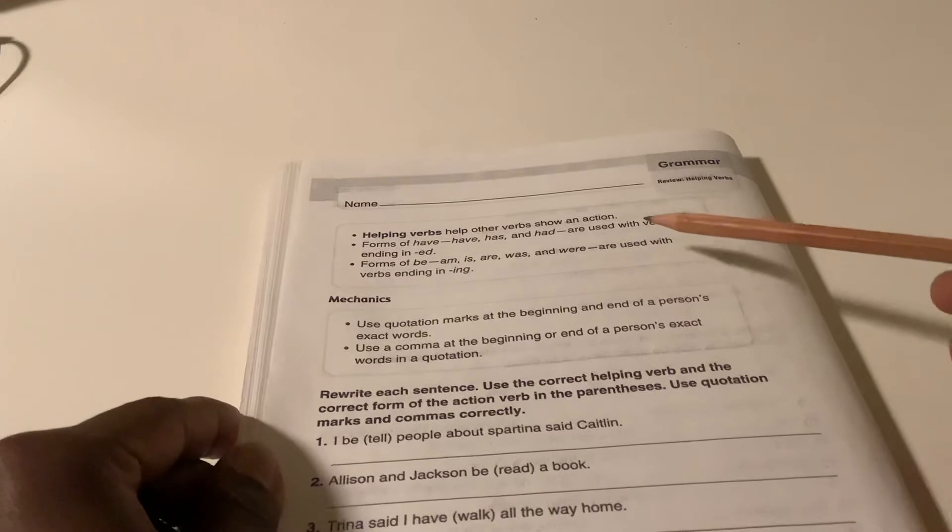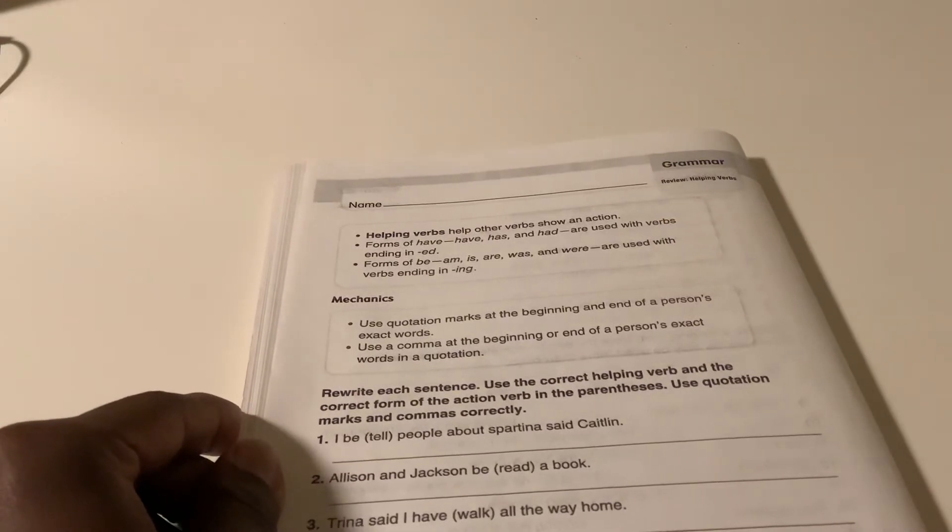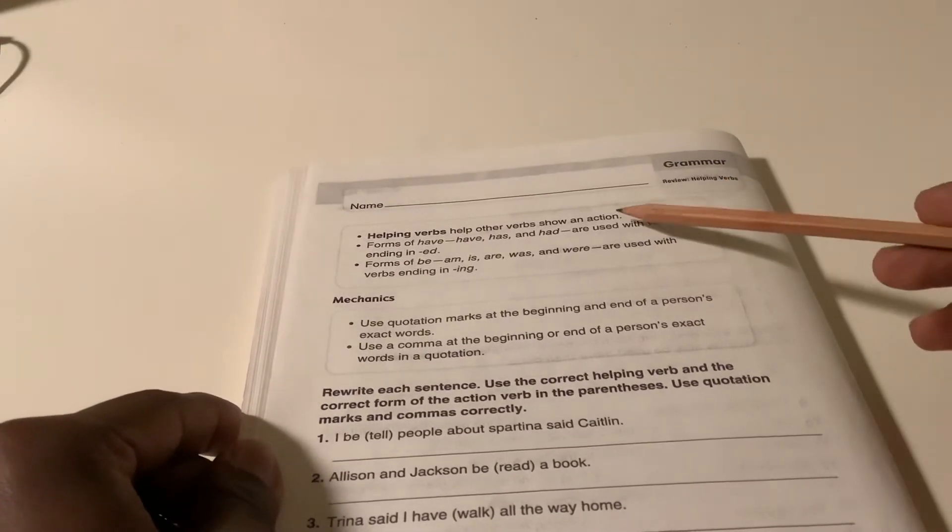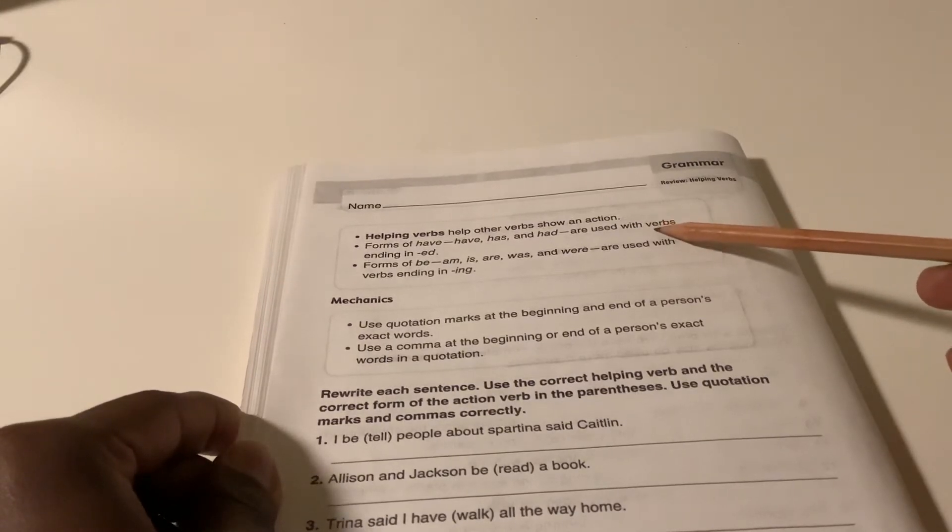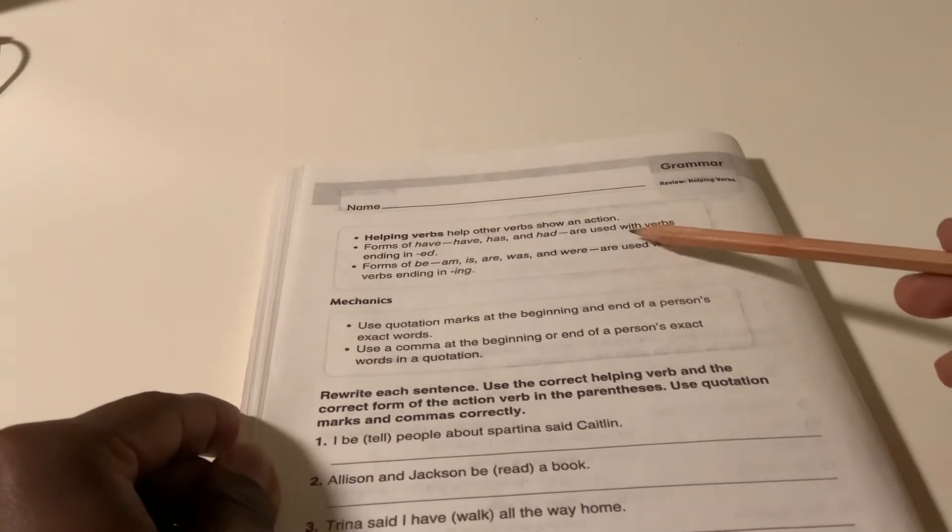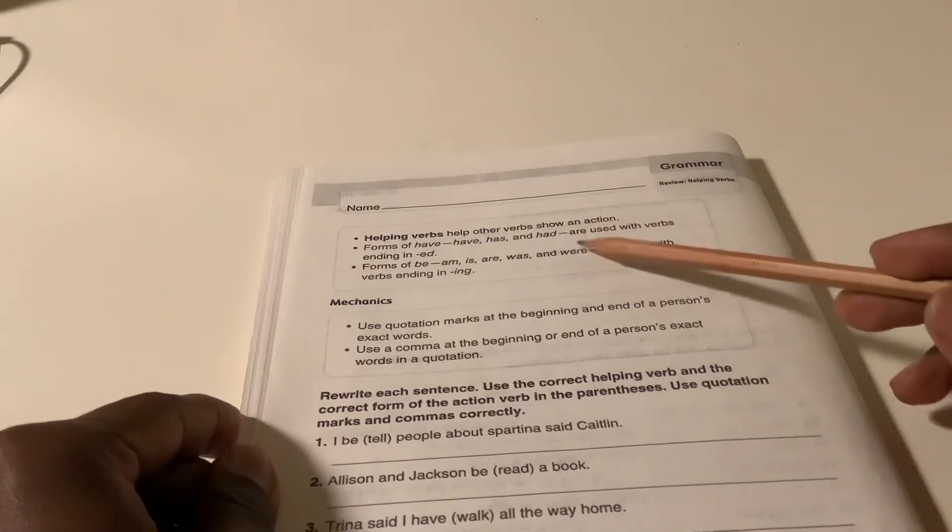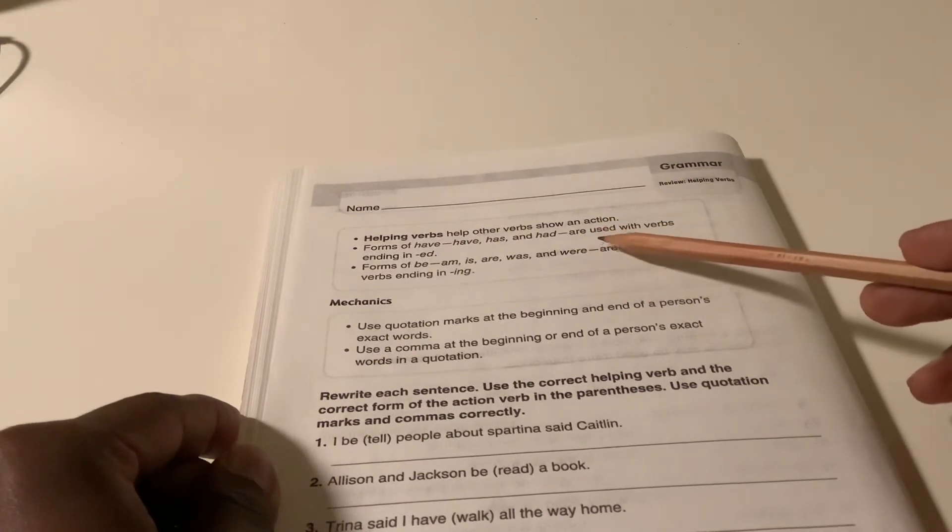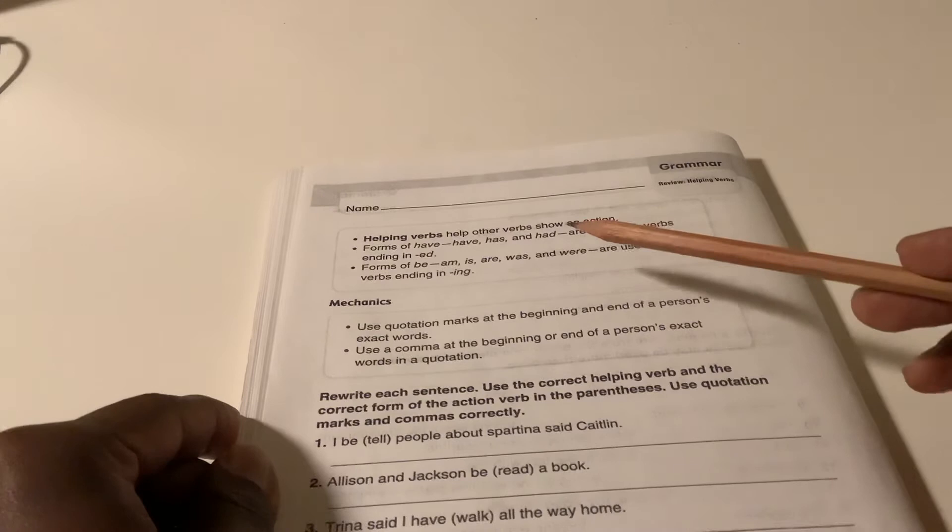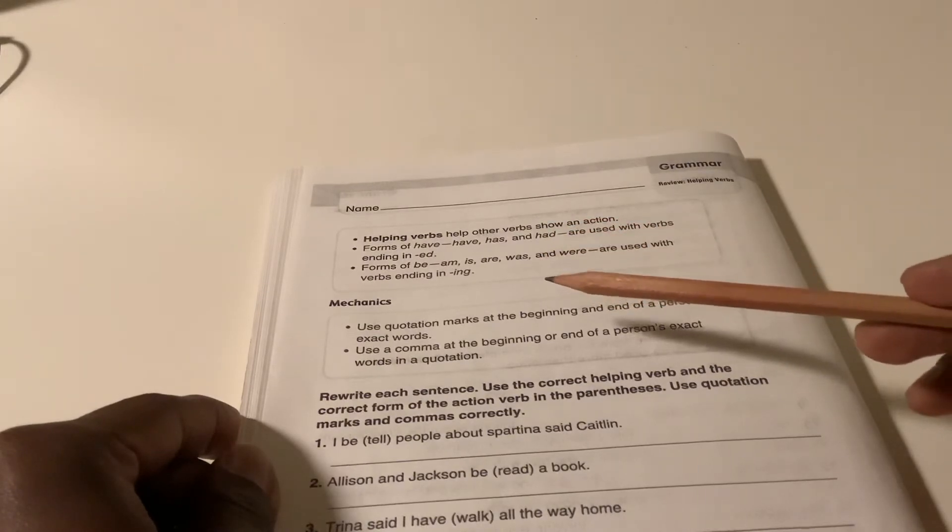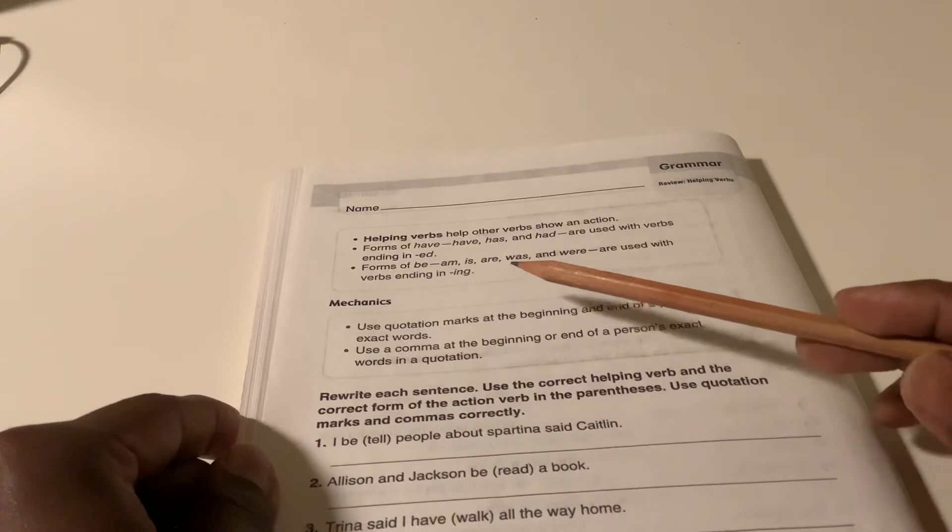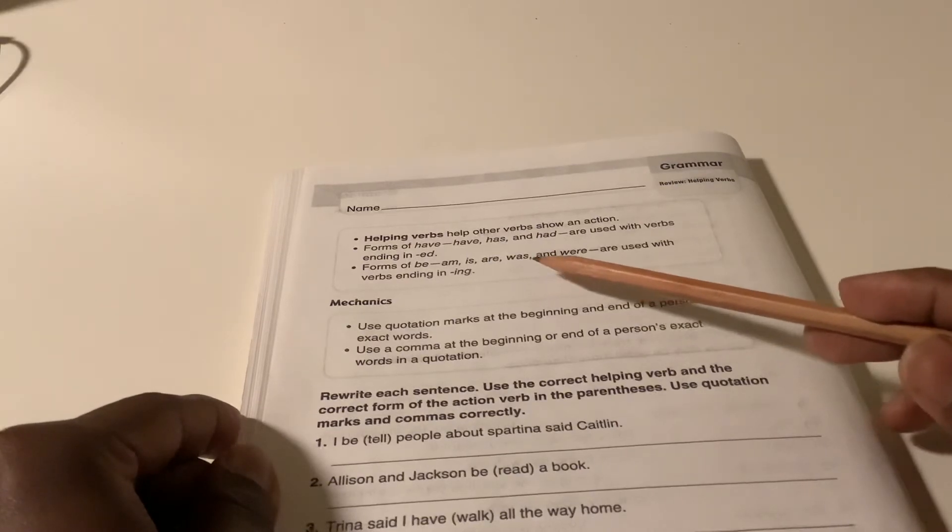Point number 1, helping verbs help other verbs show an action. Point number 2, forms of have: have, has, and had are used with verbs ending in ed. Point number 3, forms of be.